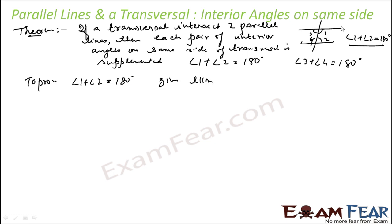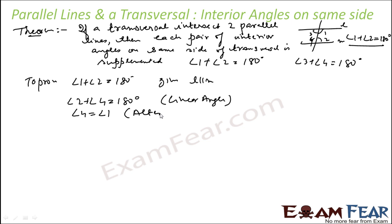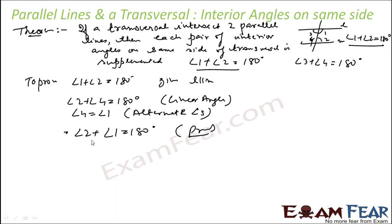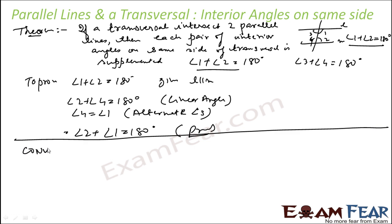To prove: angle one plus angle two is equal to 180 degrees. Given: L is parallel to M. Angle two plus angle four equals 180 degrees — they are linear angles. Also, angle four is equal to angle one — alternate angles — which is true. Using these two equations, replacing angle four with angle one, we get angle two plus angle one equals 180 degrees. Similarly, angle three plus angle four equals 180 degrees. Pretty easy — that is my theorem.